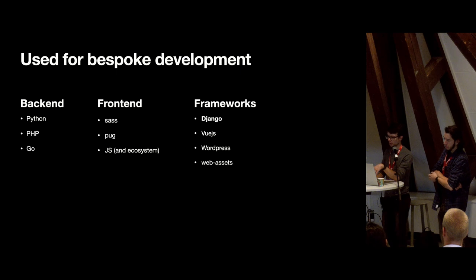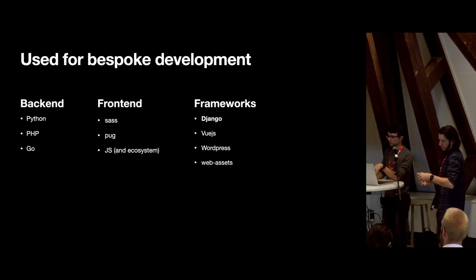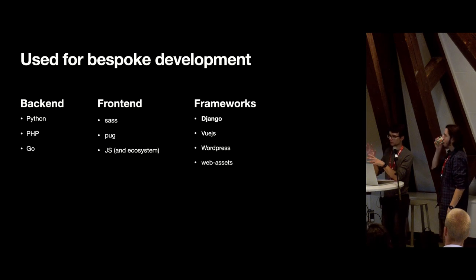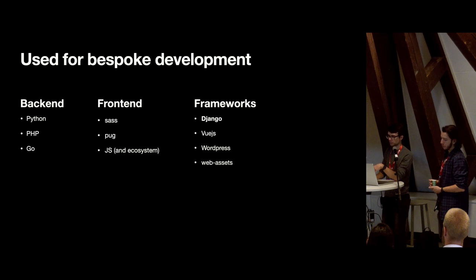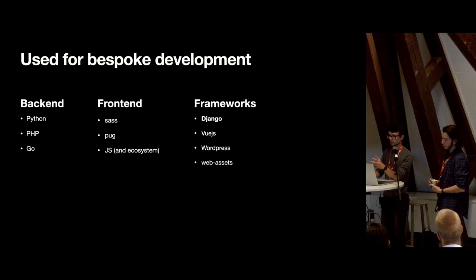For the front-end we use SASS and JavaScript with its wider ecosystem. There's nuance in how these tools are used depending on the website. For frameworks, we use Django, Vue.js, WordPress, and WebAssets. Django is a very popular and well-established Python web framework. Vue.js is a JavaScript front-end framework. WebAssets is a front-end framework originally made by Pablo, maintained by a small team, to give a coherent look and feel across all our applications.